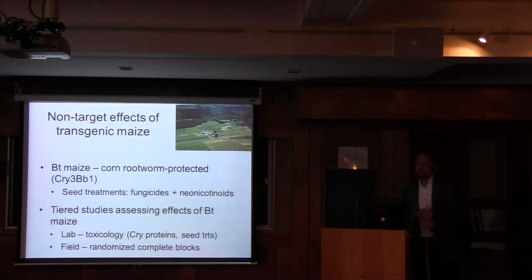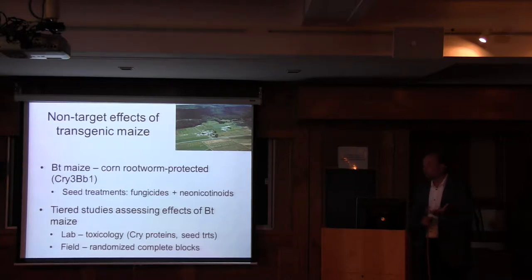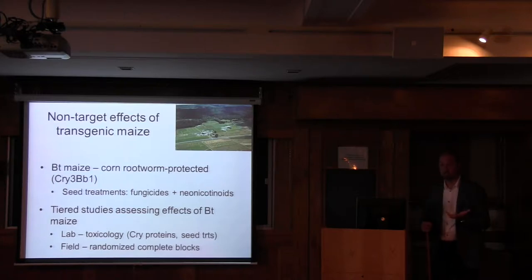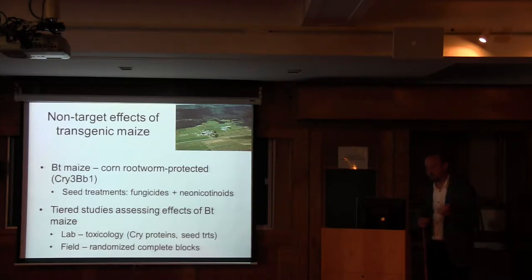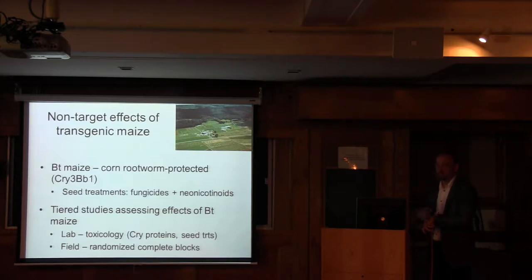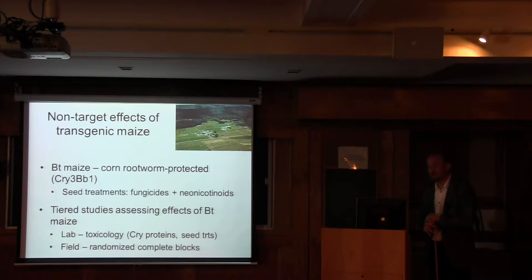Many studies on non-target effects try to isolate the effect of the transgene. We used a systems approach — a real-world approach — because this cry3 BT maize comes coupled with neonicotinoid seed treatments. Our tiered studies were preceded by laboratory toxicology work testing the cry proteins. Long story short, they seemed to have no effect on carabid beetles fed large amounts of BT corn pollen for hundreds of days. Different story with the seed treatment: when presented with neonicotinoid-treated seedlings, we had nearly 100% mortality of beetles in the lab setting, though with a slight anti-feedant effect.